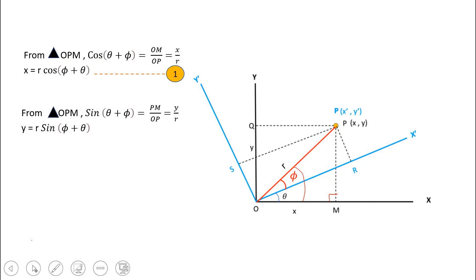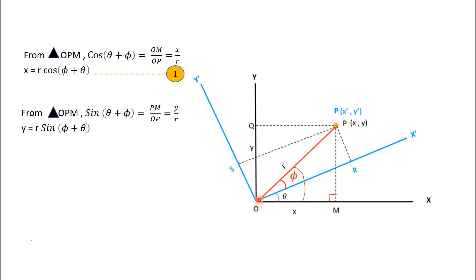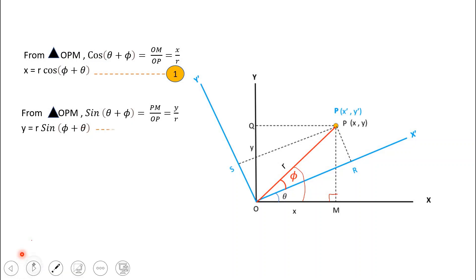Considering the same triangle OPM, sin(theta + phi) equals opposite side PM divided by hypotenuse OP. Since PM equals OQ = y and OP = R, we get sin(theta + phi) = y/R, so y = R·sin(theta + phi). This is equation 2.